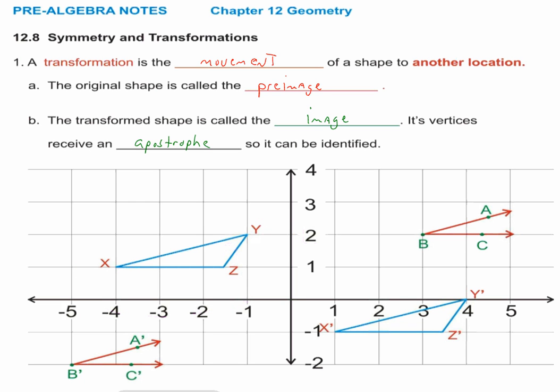So is this the image or the pre-image? This is the pre-image. This pre-image has been translated, or moved, over to here. Notice now, instead of X, we have X apostrophe — you say 'X prime.' So X prime, Y prime, Z prime — and this moved shape is the image. The original is the pre-image; the new, moved shape is the image.